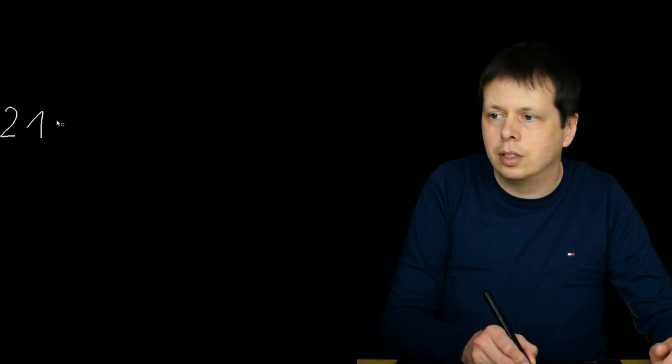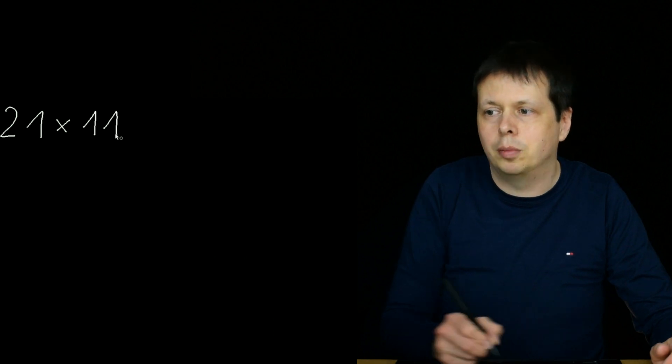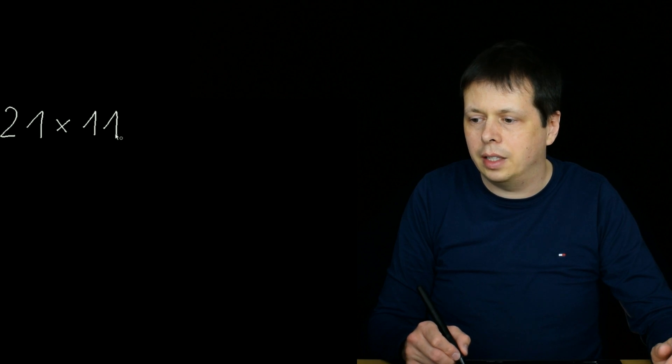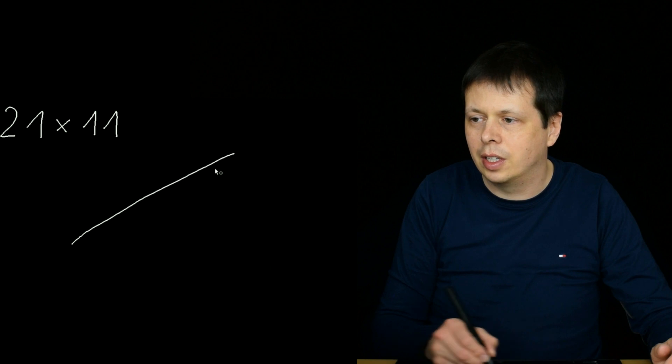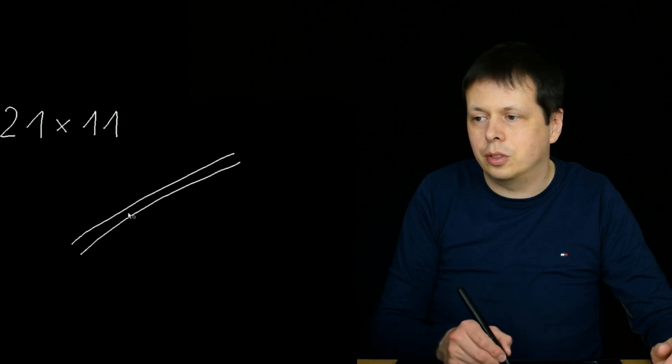Hello and welcome to another math lesson. Today I want to show you a way to multiply two two-digit numbers — it's called Chinese multiplication. Let's start with the first example: 21 multiplied by 11. You draw lines, and these two lines are for the two from the 21.